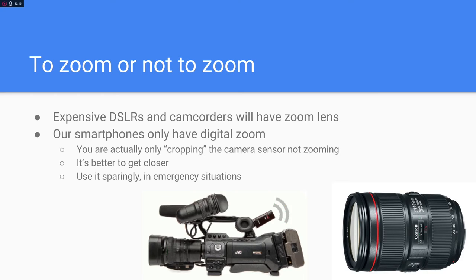Something I see a lot in amateur video is zooming. Expensive camcorders and DSLRs have zoom lenses with a motor that physically pushes the lens. Smartphones have digital zoom, where you're actually cropping the camera sensor rather than truly zooming. Generally with smartphones it's better to get closer physically. If you don't zoom in you won't get the shot, then zoom in sparingly in those emergency situations.